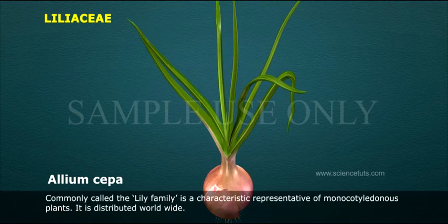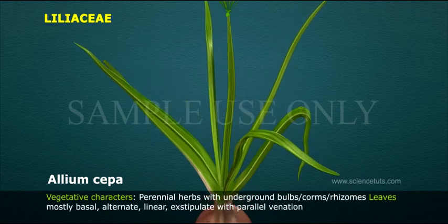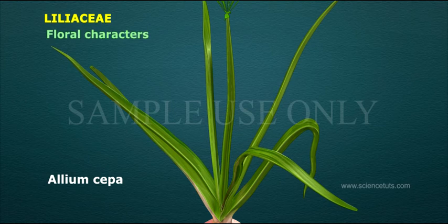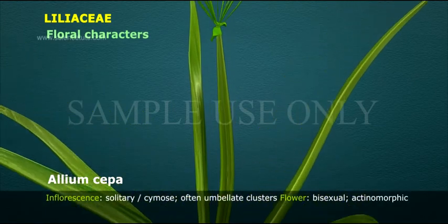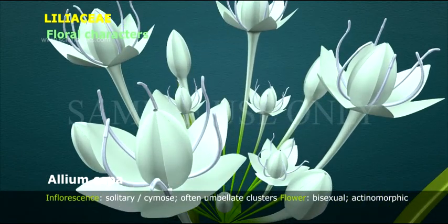Liliaceae: commonly called the lily family, is a characteristic representative of monocotyledonous plants. It is distributed worldwide. Vegetative characters: perennial herbs with underground bulbs, corms, rhizomes. Leaves mostly basal, alternate, linear, exstipulate, with parallel venation. Inflorescence solitary or cymose, often umbellate clusters.